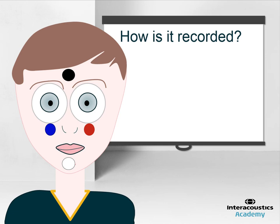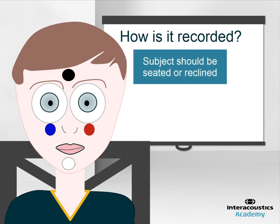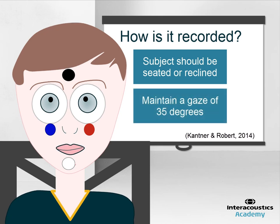Just like the CVEMP, the OVEMP requires the active participation of the patient. To record the response, the subject should be seated or in a reclined position and is instructed to maintain an upwards gaze at 35 degrees for the duration of the recording.